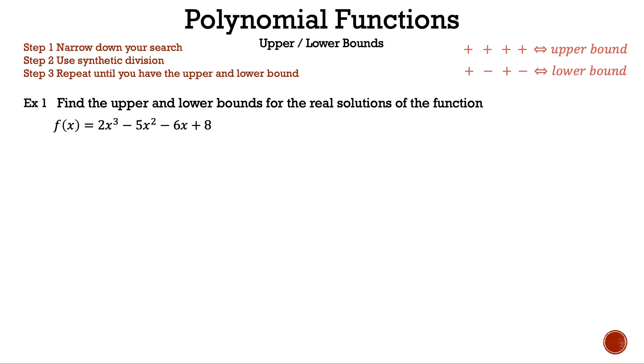First, we need to find the factors of the constant, which is 8, and divide those by the factors of the leading coefficient, which is 2. So we have ±1, 2, 4, 8 on top and ±1, 2 on bottom. The result will narrow down the search for the bounds. We want to start with a number in the middle so we can eliminate numbers that are greater or lower than that one.